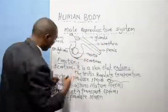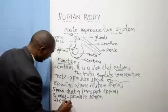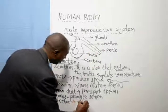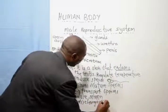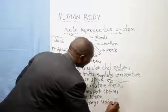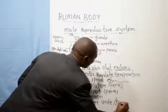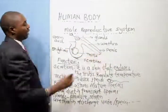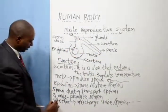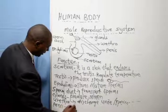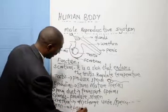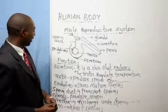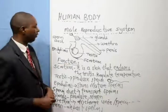Then the urethra discharges urine and sperm to the outside of the body. Then the penis deposits sperm in the vagina. Those are the functions of the different organs.